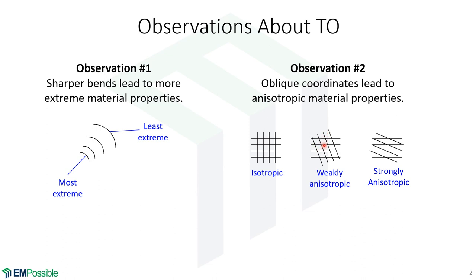The less those crossings are at 90 degrees, the more anisotropic our transform becomes. And so the closer we can get to 90 degree crossings, the more isotropic we would like to get. And we would like our design to be isotropic because that is much more easy to realize.